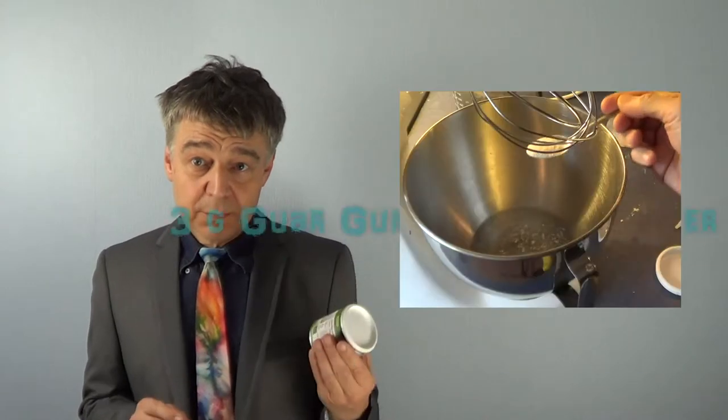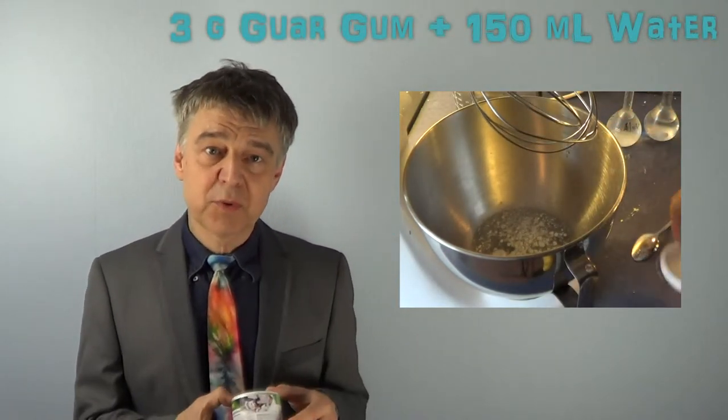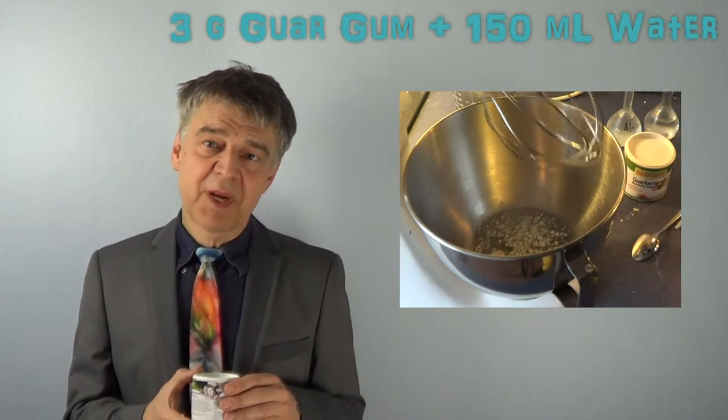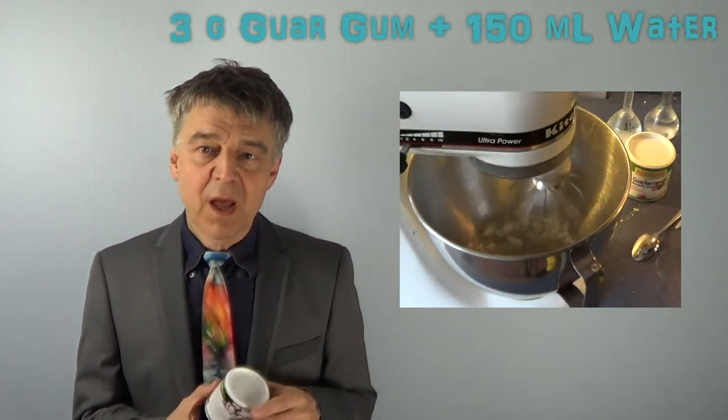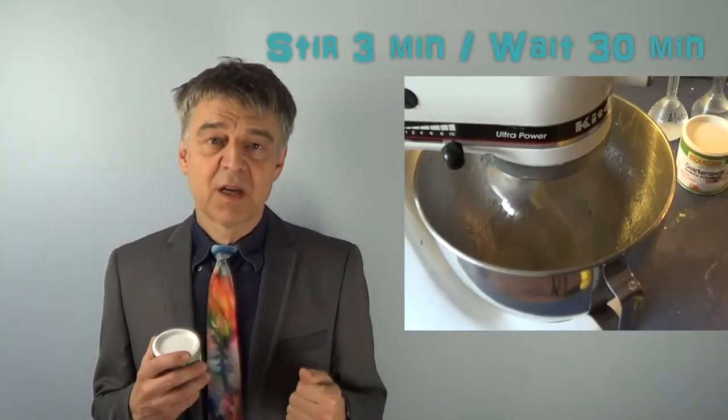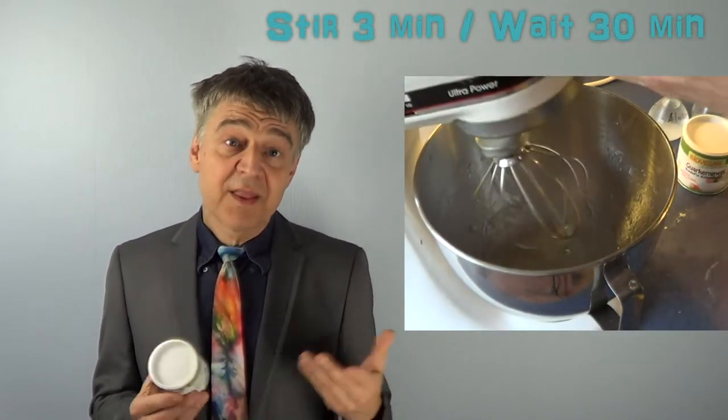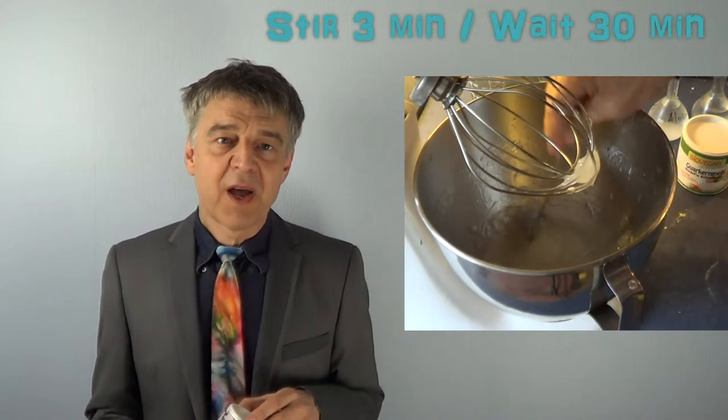First, we dissolve guar gum in water, about 3 grams in 150 ml of water, producing a very viscous liquid, just like ketchup. We stir the solution for about 3 minutes and let it sit for about half an hour.